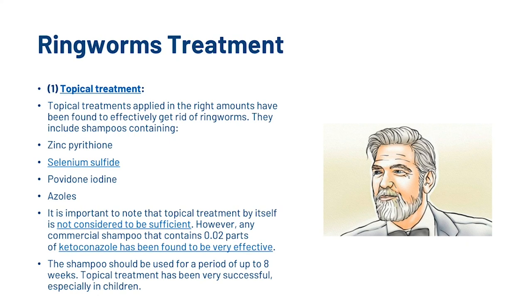To treat ringworm, the first recommendation is topical treatment. Topical treatments applied in the right amounts have been found to effectively get rid of ringworm, and include shampoos containing various antifungal ingredients. It is important to note that topical treatment by itself is not considered sufficient; however, any commercial shampoo containing 0.02 parts ketoconazole has been found to be very effective. The shampoo should be used for a period of up to 8 weeks, and topical treatment has been very successful, especially in children.